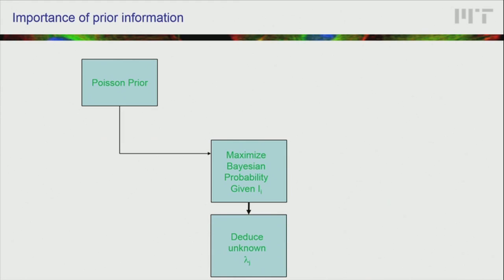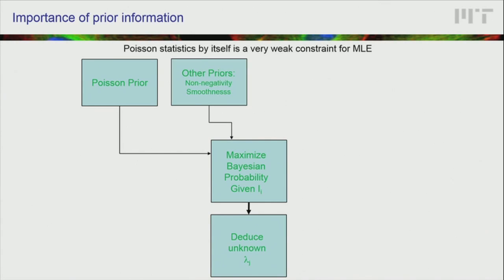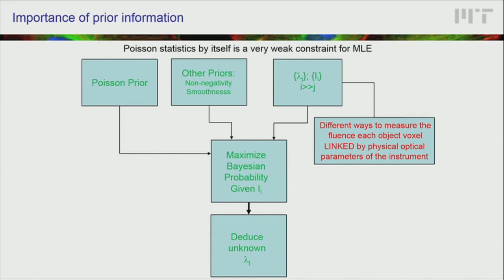In general, we want to distill the fluorescence distribution lambda by maximizing the probability given a set of intensities I, based on Poisson statistics. But one of the issues is that the Poisson prior is a very weak constraint — by itself, it is often not sufficient to deduce the fluorescence distribution. So we typically want additional constraints such as non-negativity or smoothness. But the most powerful constraints come from measuring each voxel's fluorescence distribution by multiple different methods, linking multiple intensity measurements through a quantitative optical model, allowing much better estimation.